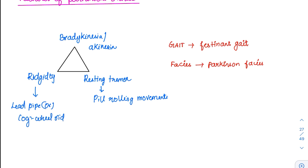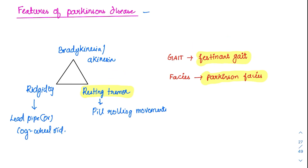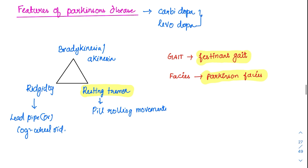Other features include a typical festinant gait, where the patient is stooped and walks with short, shuffling steps while also having resting tremor. The patient also exhibits masked facies, known as Parkinson's faces. The classical treatment for Parkinson's disease — since dopamine is deficient — is carbidopa combined with levodopa, which are isoforms of dopamine. Pharmacologically there are many drugs, but these two are very important.